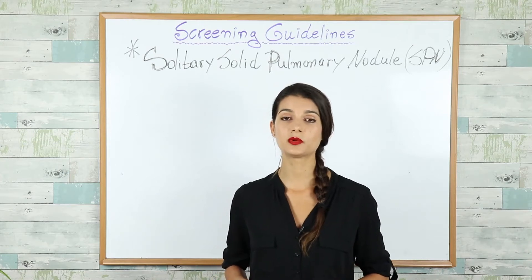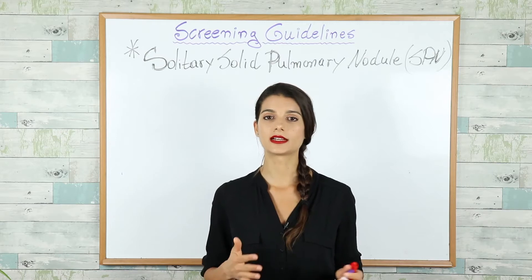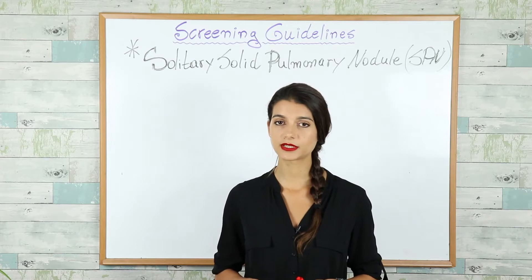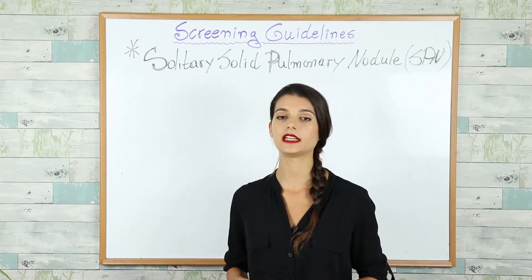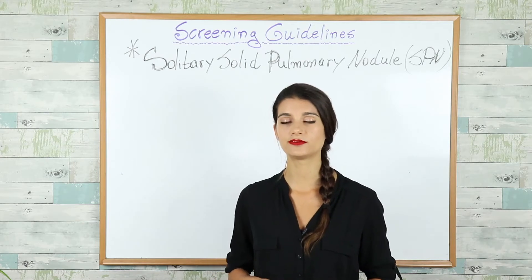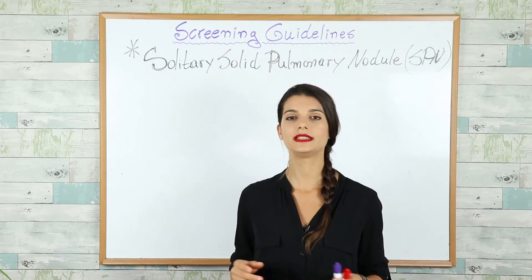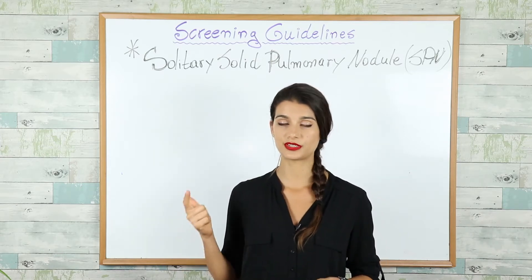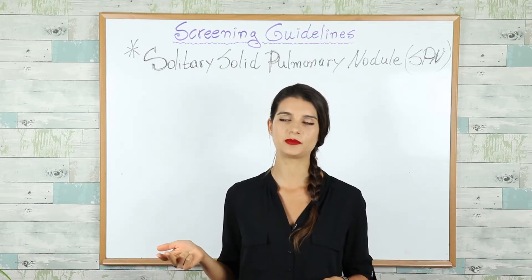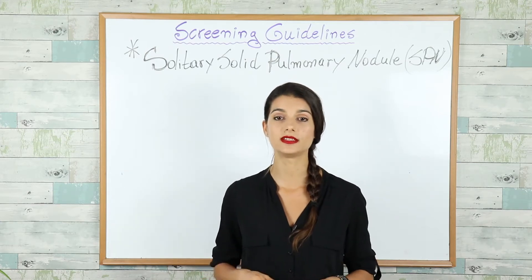Moving on to solitary solid pulmonary nodule. The lung cancers that present with such nodules are adenocarcinoma, large cell carcinoma, and squamous cell carcinoma. Adenocarcinoma is the most common lung cancer in non-smokers, and along with large cell carcinoma, it is found most often in the periphery of the lungs. Squamous cell carcinoma — remember all the S's: squamous cell, central lesion, hypercalcemia because it releases PTH-like peptide, smoking, and it creates cavitations.